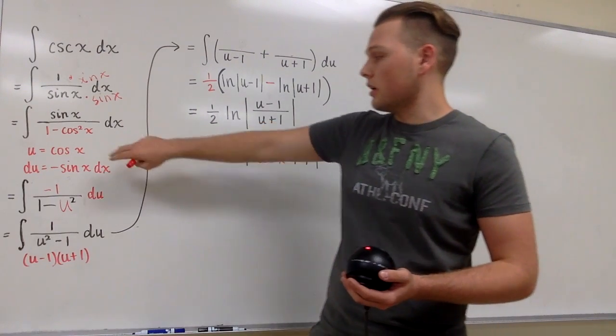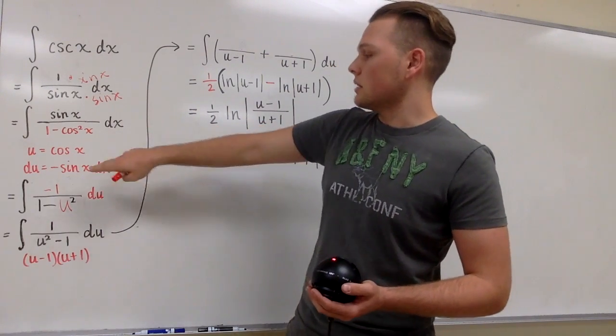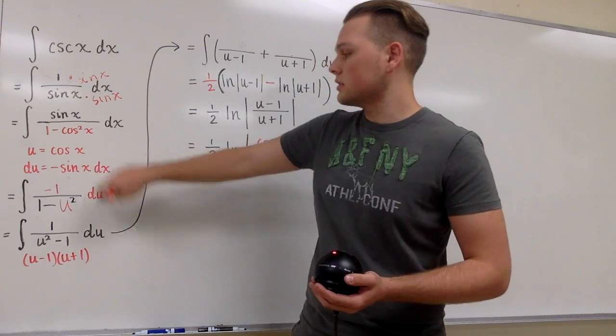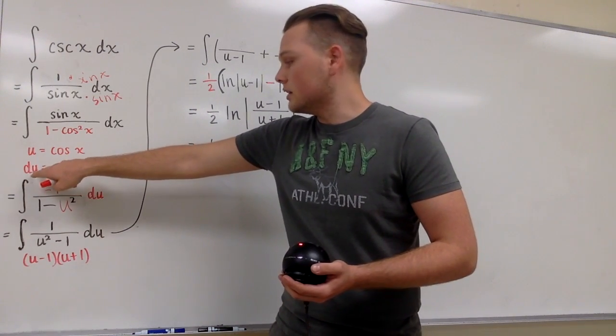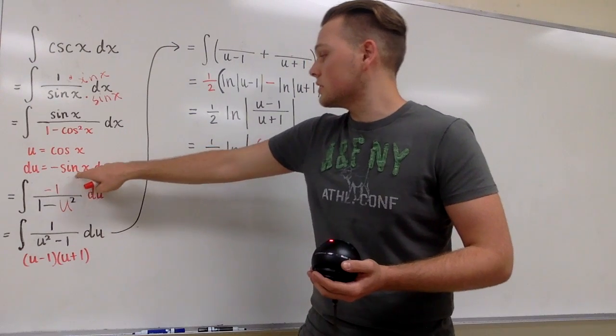Now we can call upon the u substitution and substitute in for u cosine x, and by differentiating we get du is equal to negative sine x dx.